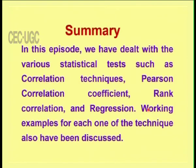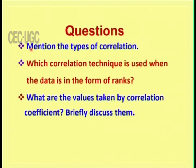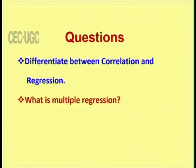Some review questions: First, mention the types of correlation. Second, which correlation technique is used when the data is in the form of ranks? Third, what are the values taken by the correlation coefficient — briefly discuss them, since the correlation coefficient can only take certain values. Fourth, differentiate between correlation and regression. Fifth, what is multiple regression? With that, we conclude this episode. Thank you.